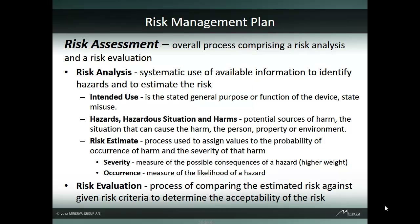For every harm, a risk estimate needs to be performed. The risk is evaluated on severity of the harm and the likelihood of occurrence. To complete the risk assessment, a risk evaluation is performed. The evaluation process and criteria, as well as what constitutes acceptable risk, needs to be documented as part of the overall risk management plan. Typical practice is to assign a number to severity and occurrence and multiply them together for a risk number. The risk number is compared to a risk chart and would classify the risk as high, medium, or low.